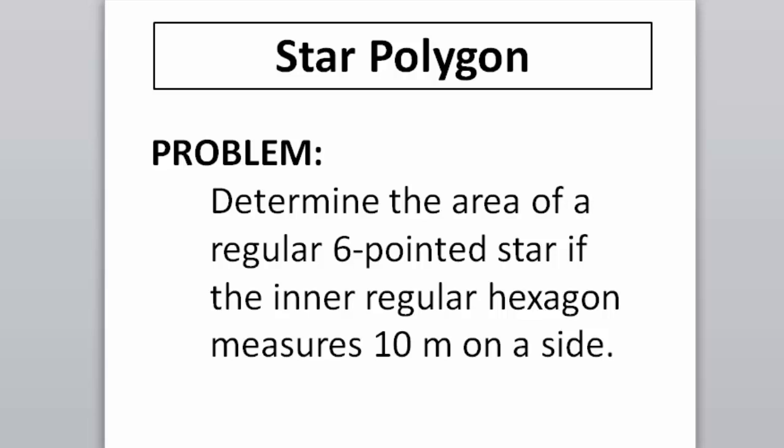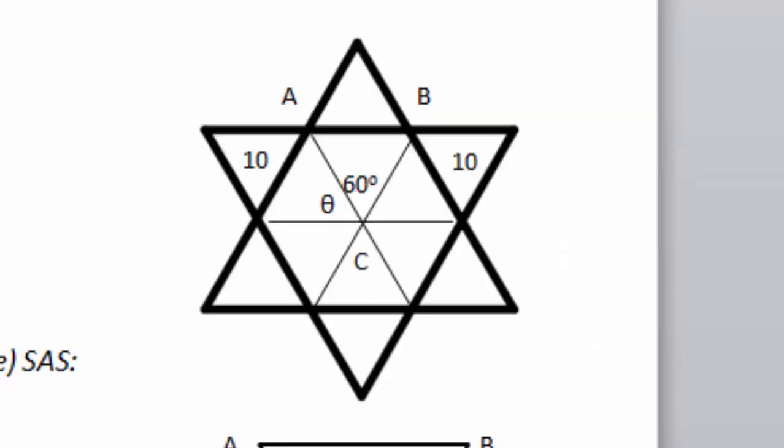This is a problem about star polygon. The problem states: determine the area of a regular six-pointed star if the inner regular hexagon measures 10 meters on a side.